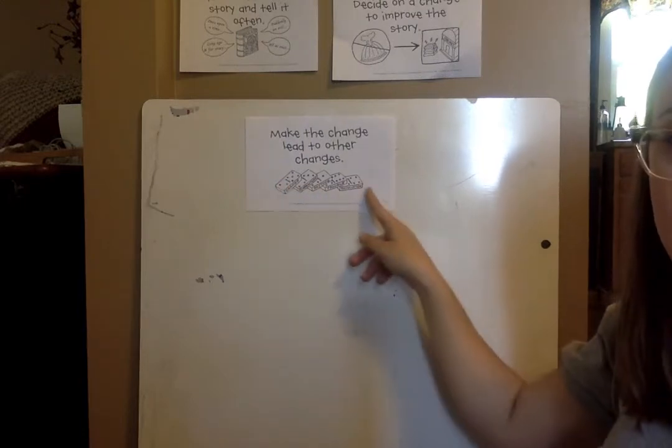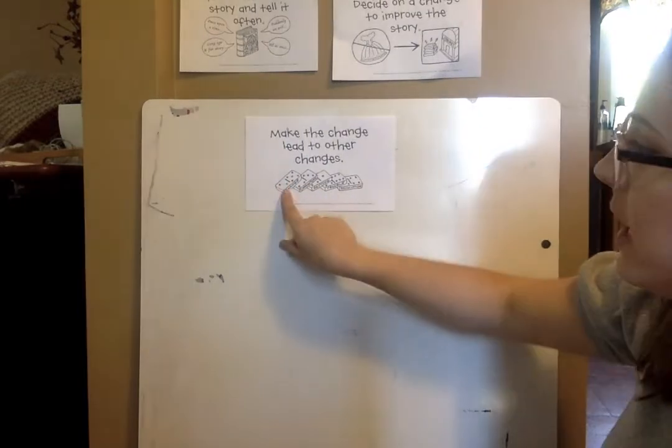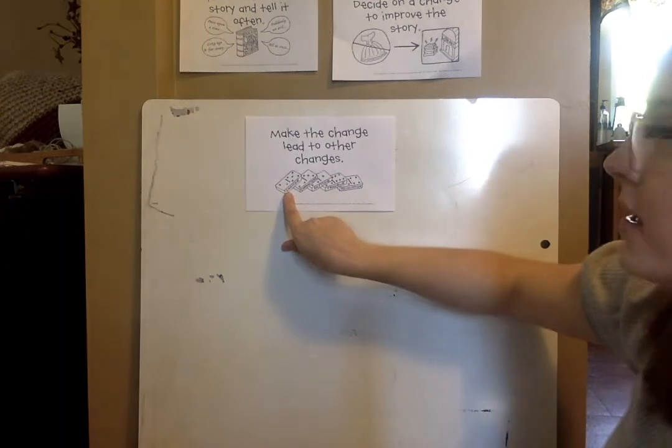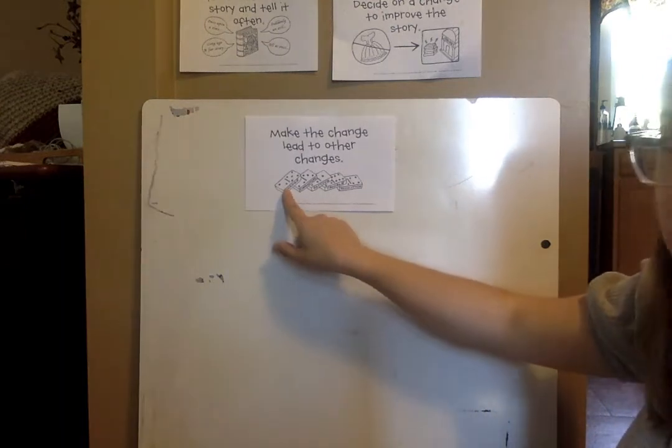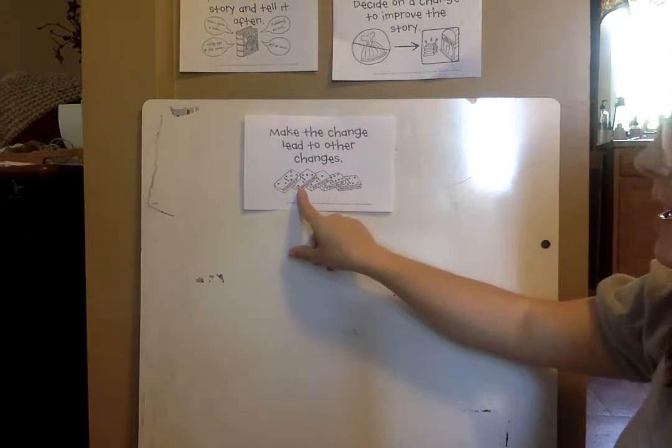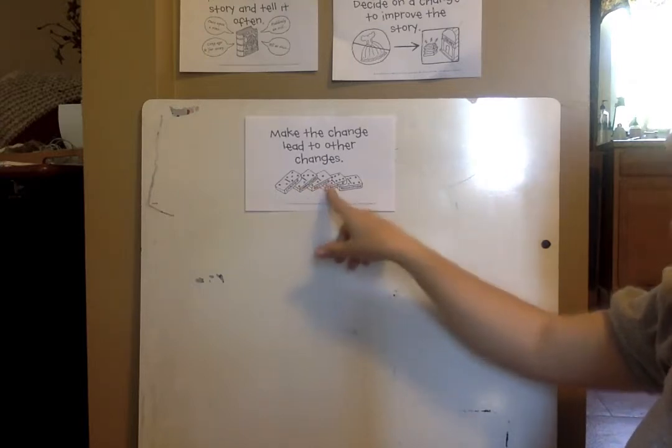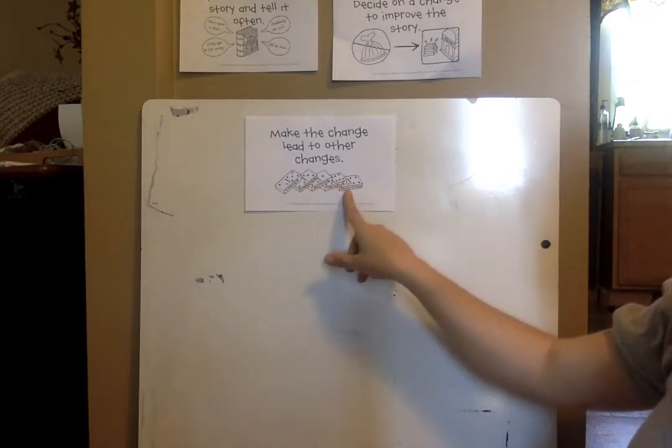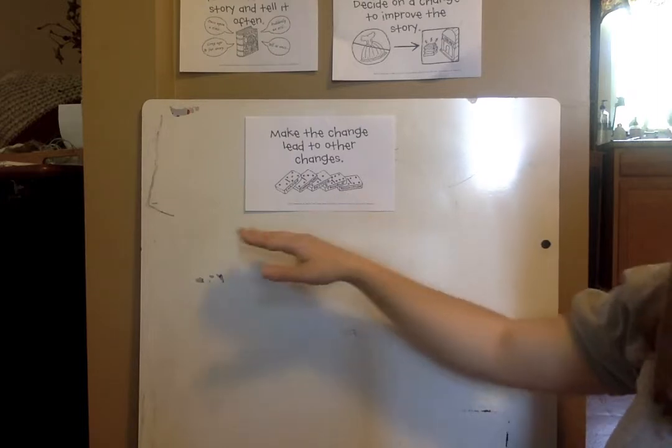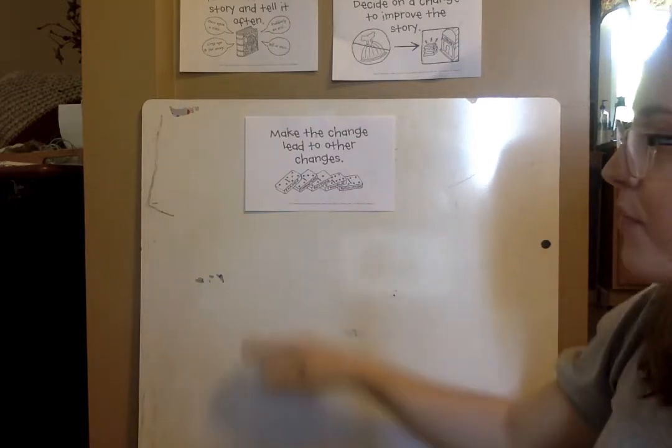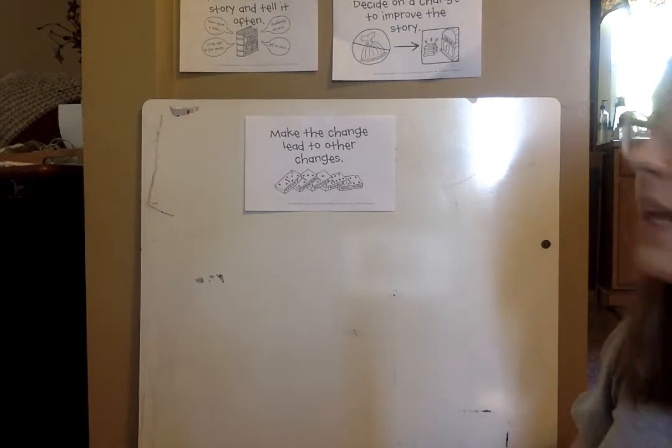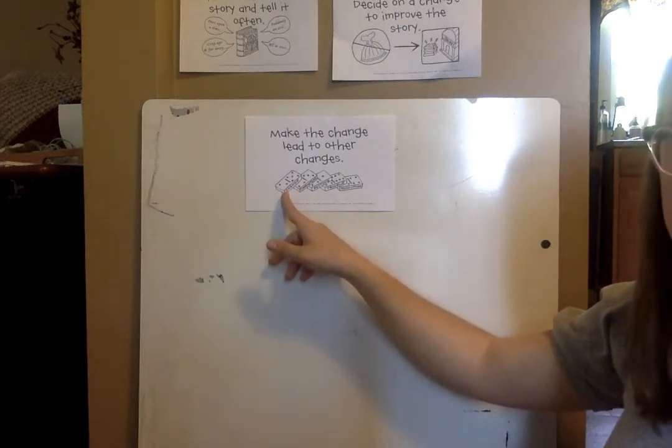So I love this little image that they use of all the dominoes falling over. And if you could see right on the little sides of the domino, it shows the change, which knocks over the characters, which knocks over the setting, which knocks over the trouble, which knocks over the resolution. So that outline that we talked about, every part of the outline is affected by the change that we introduce.